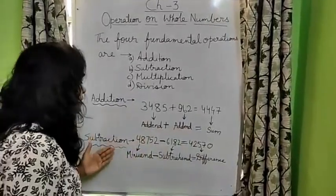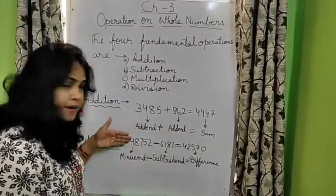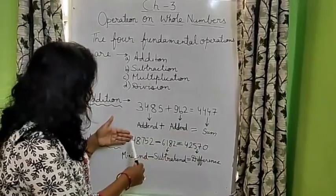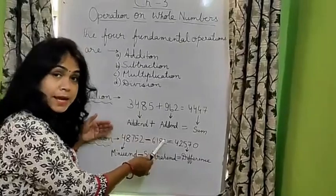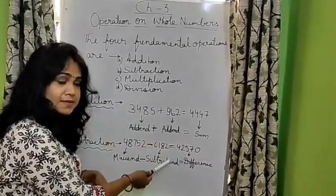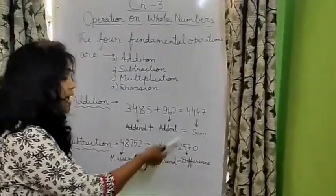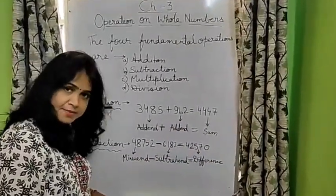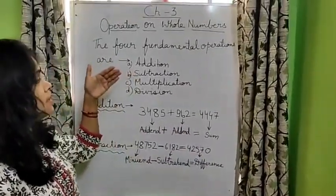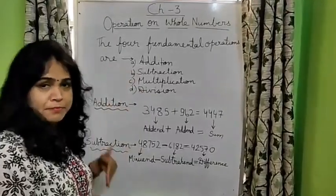Similarly in subtraction the number which subtracts smaller number is called minuend. The number which is being subtracted is called subtrahend and the result of subtraction is called difference. So these are already taught to you in your previous class.